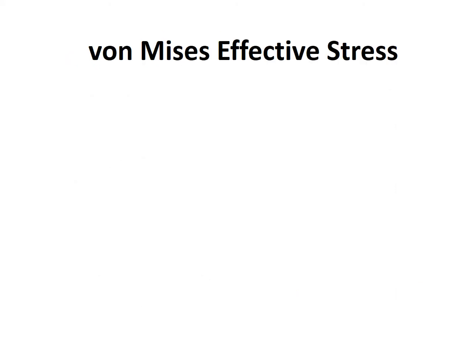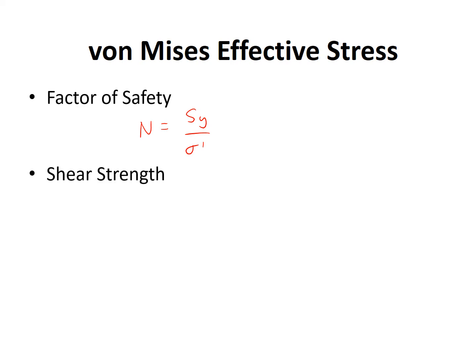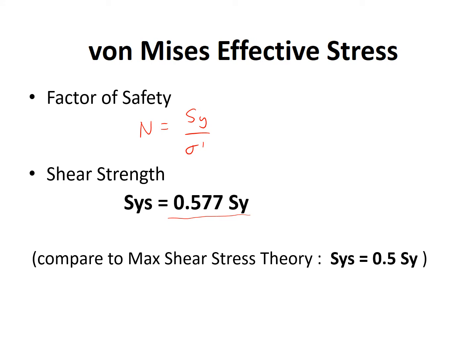Two final things with von Mises effective stress. First, our factor of safety N equals our yield strength divided by our von Mises effective stress. Second, the shear strength equals 0.577 times the yield strength. Comparing to the maximum shear stress theory, which gives 0.5 of yield strength, we see that the distortion energy theory gives a less conservative shear strength.